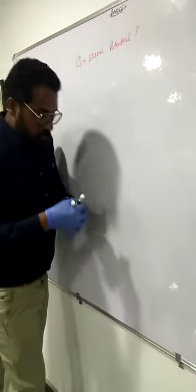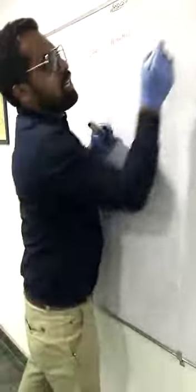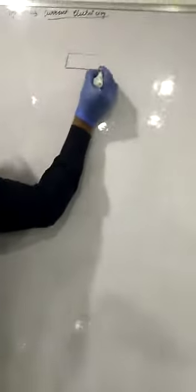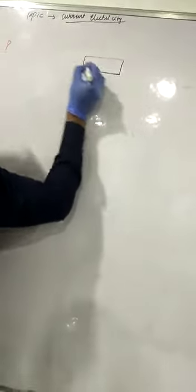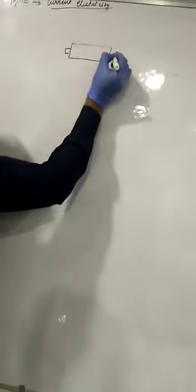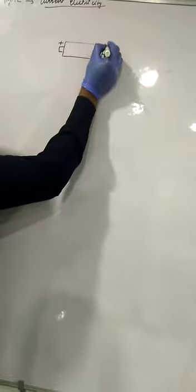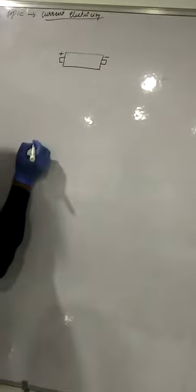Actually, you might have seen dry cells, the cells which you use for TV remote or for torches. That is having one side positive. You must see that at home even right now while watching this video. And one is having negative end.